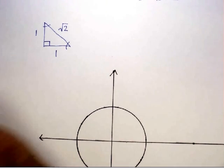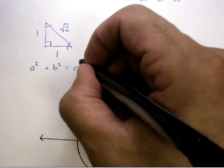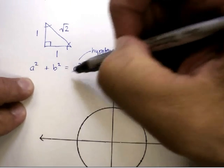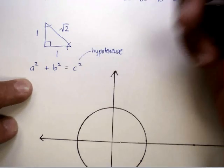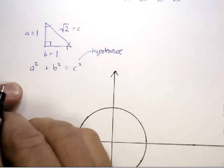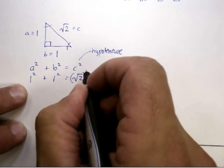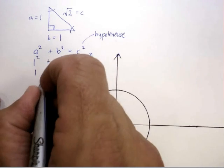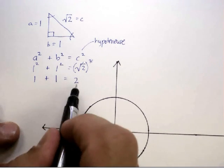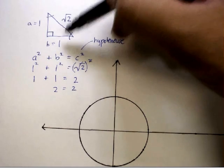Let's plug in: one squared plus one squared equals radical two quantity squared. One plus one equals two, and squaring a square root cancels them — giving two. So one plus one equals two. That's correct. These proportions hold for all 45-45-90 degree triangles.